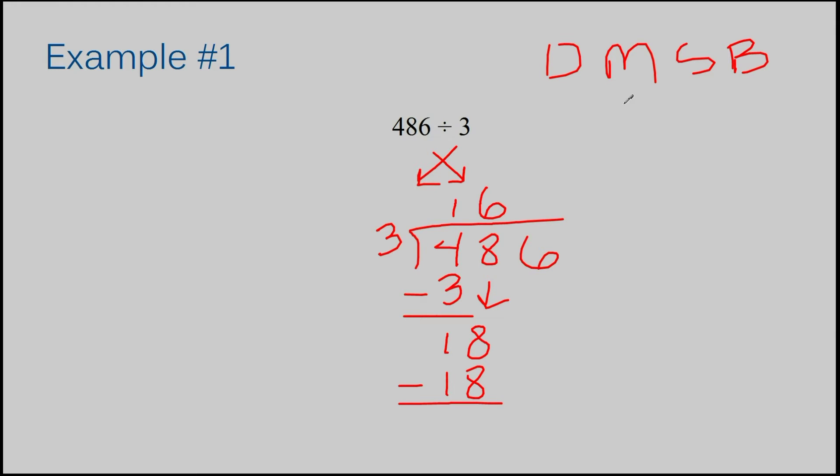It's time to subtract after you multiply. In this case, you get 0. Now let's bring down our 6. How many times does 3 go into 6? It goes in 2 times, and it is 6. We're going to subtract and get 0.